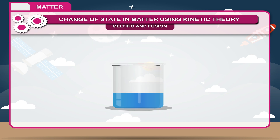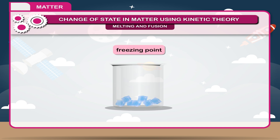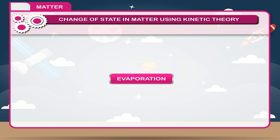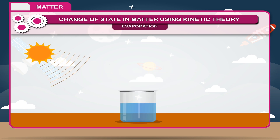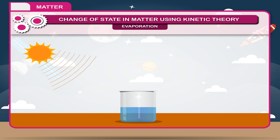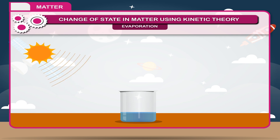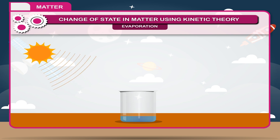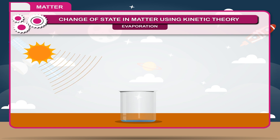The constant temperature at which a liquid freezes to solid is called the freezing point. Evaporation is a type of vaporization of a liquid that occurs from the surface of a liquid into a gaseous phase that is not saturated with the evaporating substance. In this process, a liquid becomes a gas without forming bubbles inside the liquid volume.